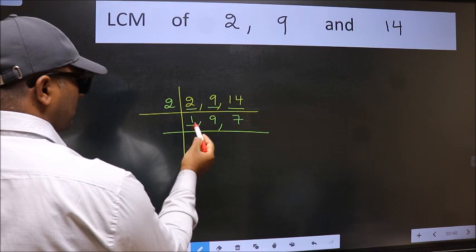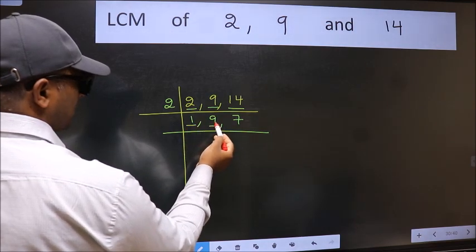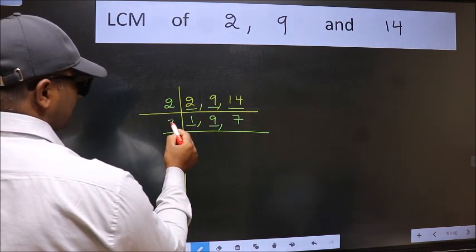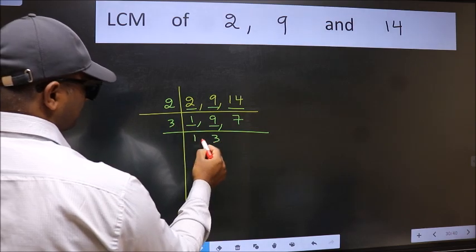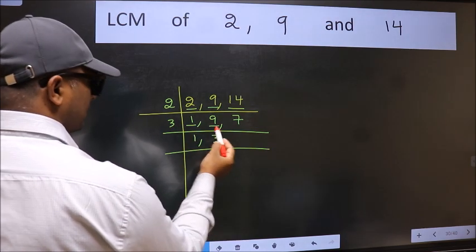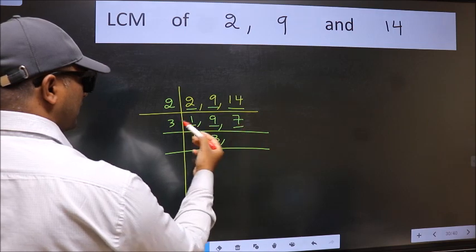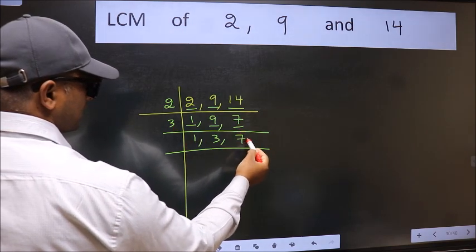Now we got 1 here. So focus on the next number 9. 9 is 3 times 3. The other number 7 not divisible by 3, so we write it down as it is.